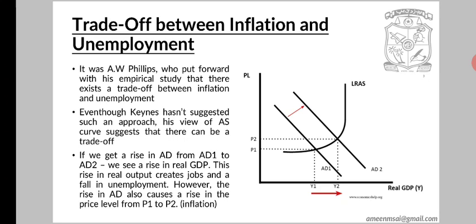If we get a rise in aggregate demand from AD1 to AD2, we see a rise in real GDP from Y1 to Y2. This rise in real output creates jobs and a fall in unemployment.